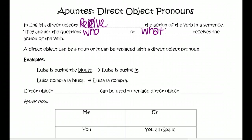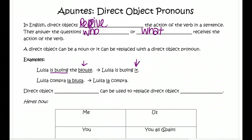A couple of examples: Luisa is buying the blouse. If you ask yourself who or what is receiving the action — so who or what is Luisa buying? The blouse. So the blouse is our direct object noun. In English, the pronoun we would use is 'it.' Luisa is buying it.